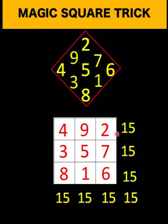4 plus 9 plus 2 is indeed 15, 3 plus 5 is 8 plus 7 is 15, 8 plus 1 is 9 plus 6 is 15. So no problem with the row sum.